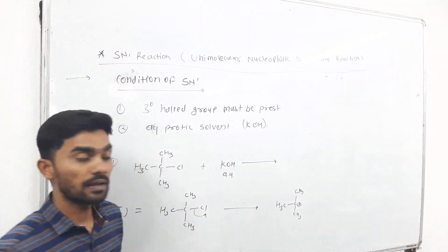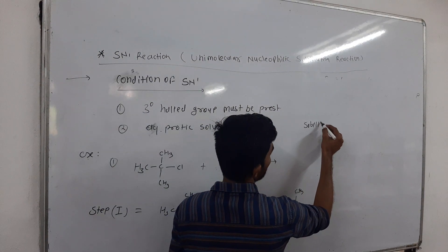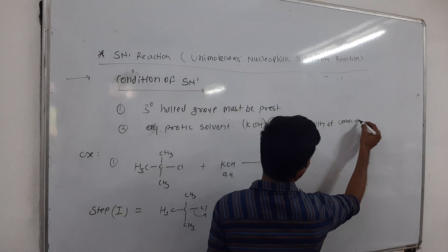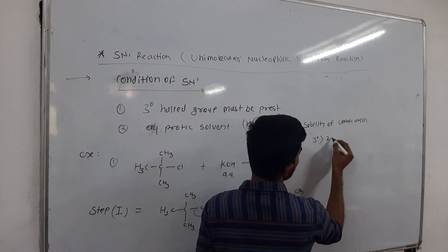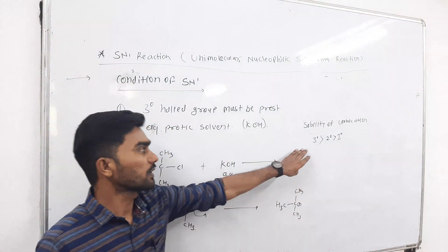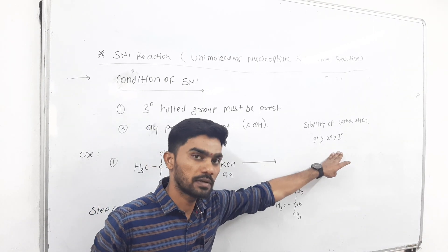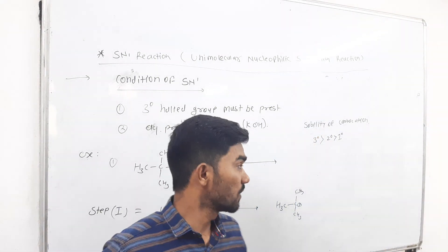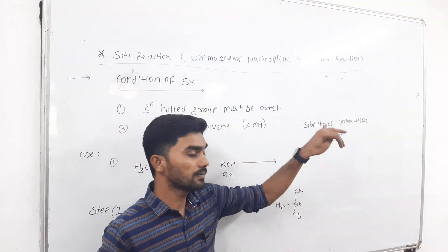The tertiary carbocation is the most stable carbocation. The stability order of carbocations is: tertiary carbocation is more stable than primary. Primary carbocation is less stable. Therefore, tertiary substrates are used in SN1 reactions, not SN2 reactions.